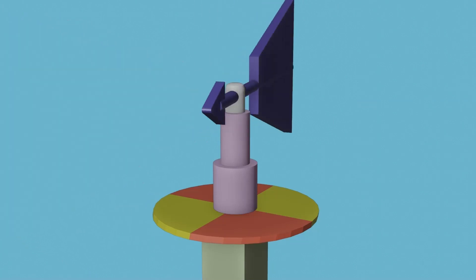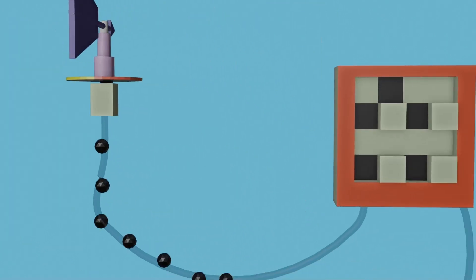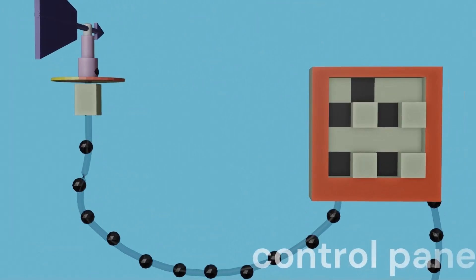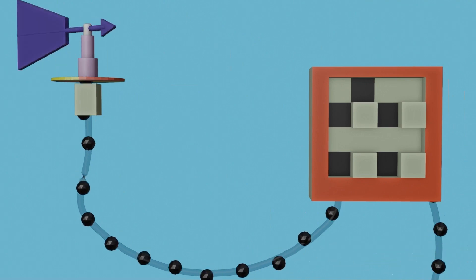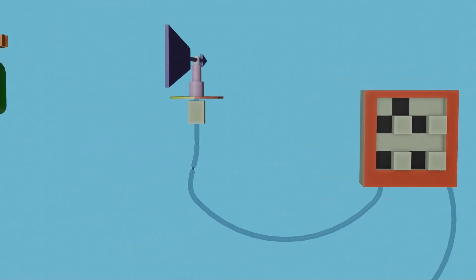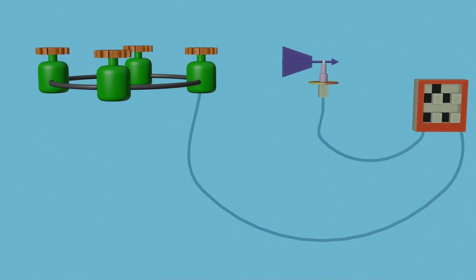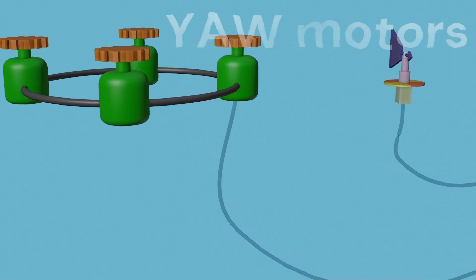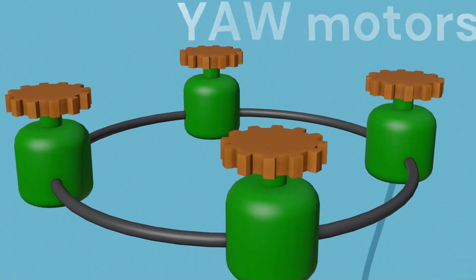The wind vane sensor sends a signal to the control panel. The control panel sends a signal to the hydraulic yaw motor. The hydraulic motor then turns the entire assembly to face the wind flow direction.